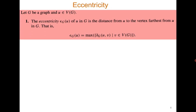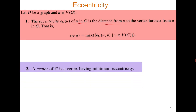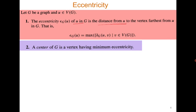Next is eccentricity. The eccentricity of a vertex u is the distance from u to the vertex farthest from u. To compute the eccentricity of vertex u, you compute its distance to all other vertices of the graph, and the maximum of all those distances gives you the eccentricity. Once you have the eccentricities, the center of the graph is the vertex having minimum eccentricity. There can be more than one vertex with minimum eccentricity. These concepts apply to any graph, not only trees.